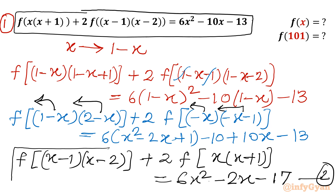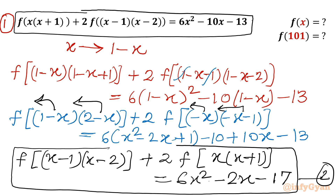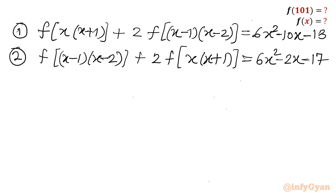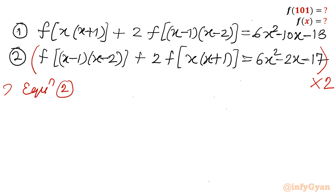Now you can see from equation 1 and equation 2 the left-hand sides are almost identical except the multipliers are swapped: in equation 1, f(x)·(x+1) has coefficient 1 and f(x-1)·(x-2) has coefficient 2; in equation 2 it is reversed. Let us solve both equations. I will multiply equation 2 by 2 and then subtract equation 1.